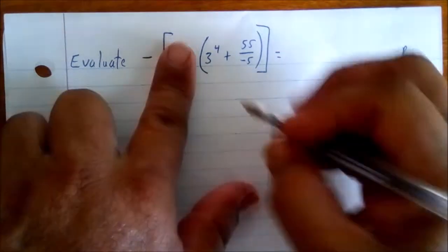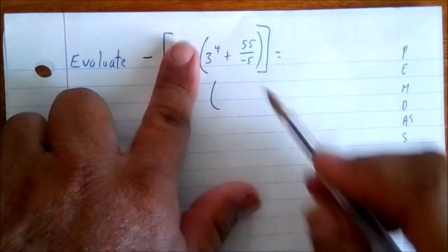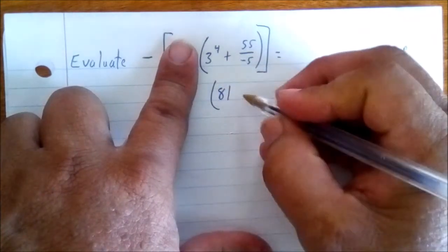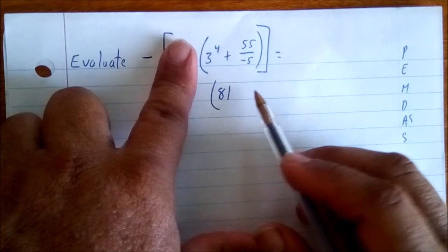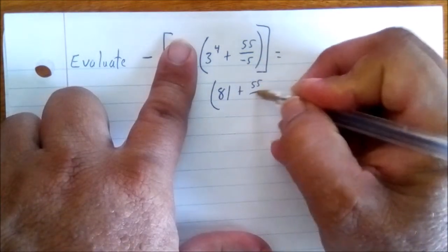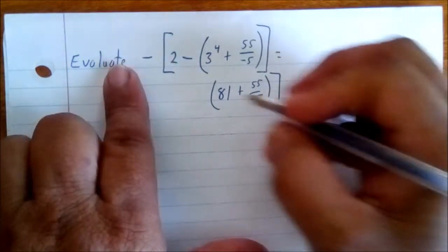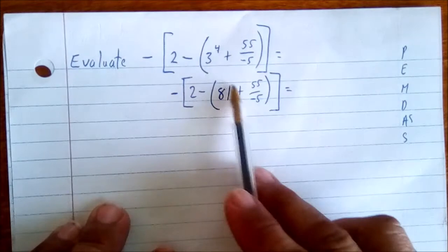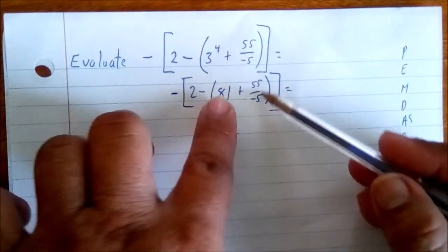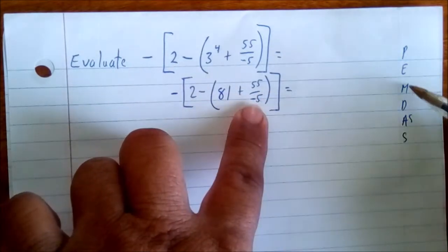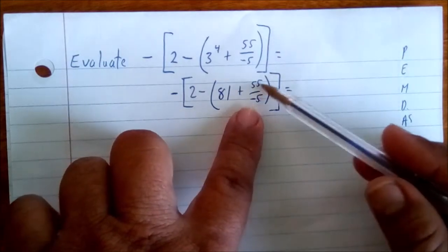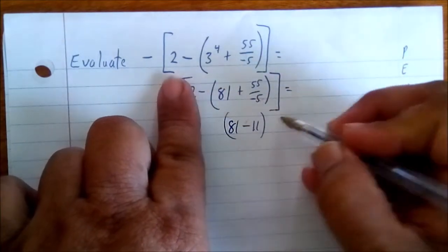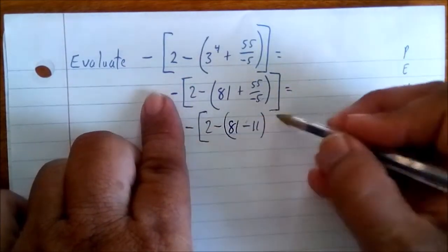3 to the fourth means 3 times 3 times 3 times 3, which equals 81. Bring down the next piece: plus 55 over negative 5. Division comes before addition, so 55 divided by negative 5 gives us negative 11.